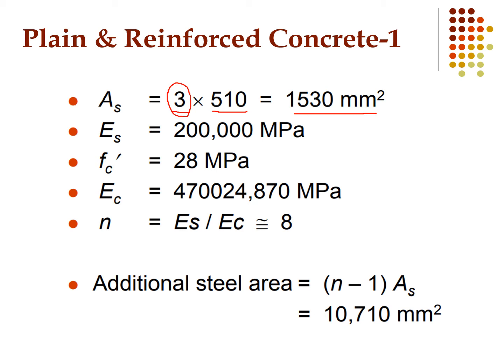The modulus of elasticity of steel is 200 GPa (200,000 MPa). f'c is 28 MPa. We calculate Ec using Ec = 4700√f'c. Plugging in the value gives us Ec, and the modular ratio n = Es / Ec gives approximately n = 8.